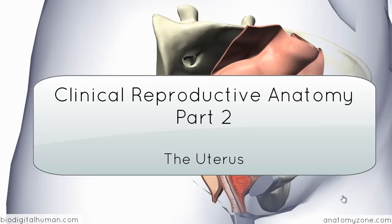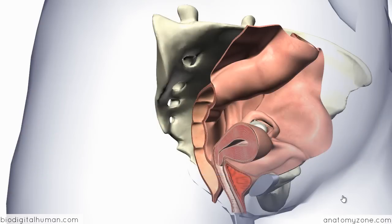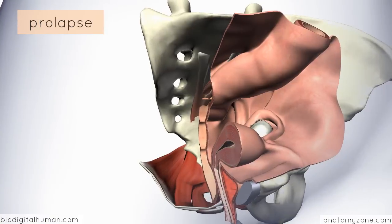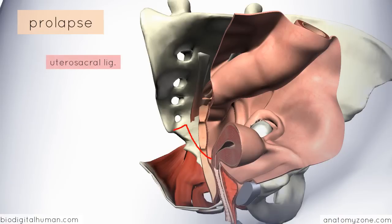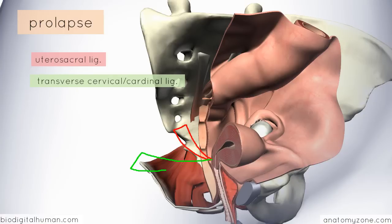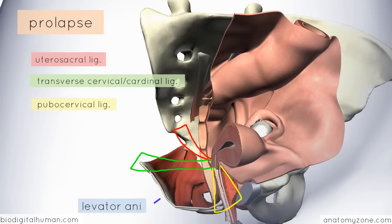Moving on to the uterus now, there are several things to talk about here. The first thing I'm going to mention is prolapse. If you remember some of the structures supporting the uterus, you've got the utero-sacral ligament attaching from the cervix to the sacrum, the transverse cervical ligament attaching to the sidewall, and the pubocervical ligament extending anteriorly. Together with the levator ani muscle, which forms the bulk of the floor of the pelvis, these structures support the uterus.